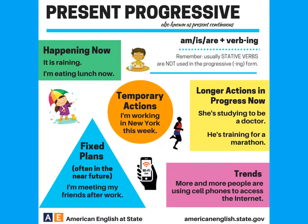Let's start with the present progressive. The present progressive tense is also known as the present continuous. It is an action that is happening now. For example, it is raining. I am eating lunch now. Both are happening right now.